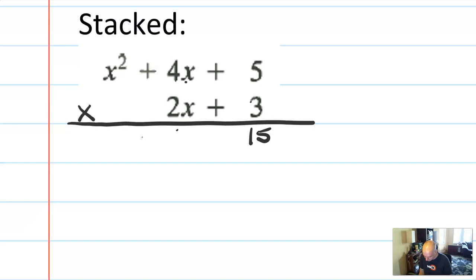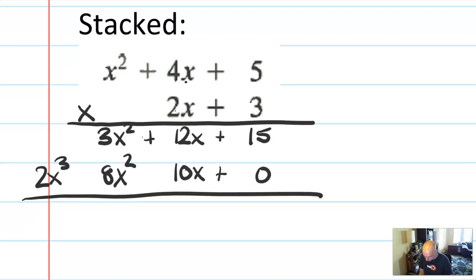3 times 4x is 12x. 3 times x squared is 3x squared. 2x times 5 is 10x. Now here, you can put a placeholder 0. Or you can just line up the terms that match. So I have 10x. I can just put it under the 12x. 2x times 4x is 8x squared. So I put it under the x squared. 2x times x squared is 2x to the third.